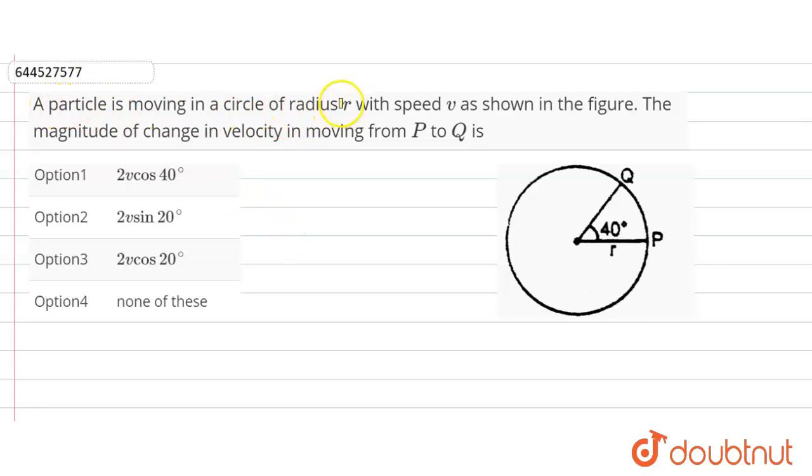A particle is moving in a circle of radius r with speed v as shown in the figure. The magnitude of change in velocity in moving from P to Q—the angle between them is 40 degrees given, and v1 is given.